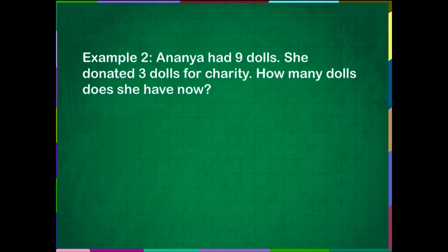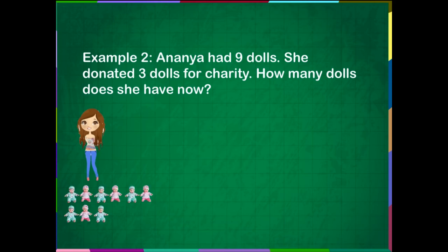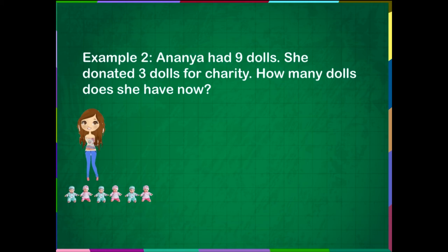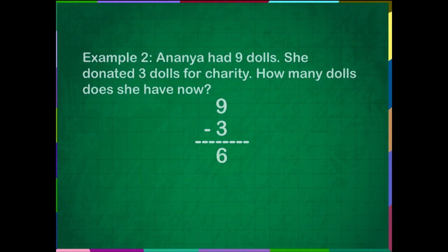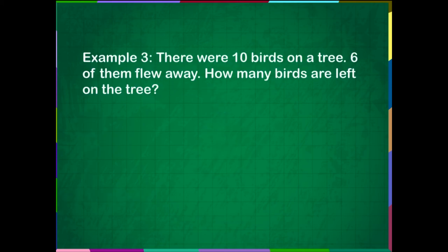Example 2. Ananya had 9 dolls. She donated 3 dolls for charity. How many dolls does she have now? Answer: 6 dolls are left with her.